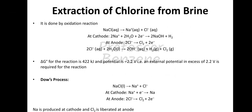We will talk about extraction of chlorine from brine. It is done by oxidation reaction. NaCl aqueous breaks into Na⁺ aqueous plus Cl⁻ aqueous. At the cathode: 2Na⁺ + 2H₂O + 2e⁻ → 2NaOH + H₂. At the anode: 2Cl⁻ → Cl₂ + 2e⁻. The overall reaction is: 2Cl⁻(aq) + H₂O(l) → 2OH⁻(aq) + H₂(g) + Cl₂(g). So here we got Cl₂ from brine, which is a solution of NaCl.